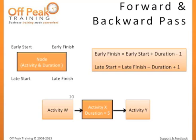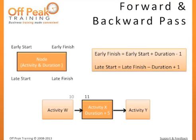Early start represents the earliest an activity can possibly begin based on all of its predecessors. For example, if our node depends on an activity that ends on the 10th day, our node's earliest possible start will be the 11th day. Early finish represents the earliest an activity can possibly finish, based on the early start of the node and its duration. It can be calculated using the formula: early start plus duration minus 1. For example, if our node has a duration of 5, we add 5 to 11 which gives us 16. Since the task will not finish at the beginning of the 16th day, we subtract 1, indicating that the task will finish at the end of the 15th day.